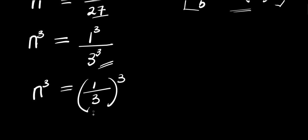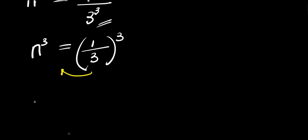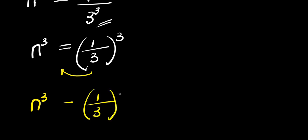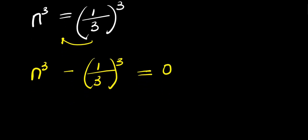So from here, we are going to move this over here — it becomes negative. So we are going to have n cubed minus (1 divided by 3) all to the power of 3, and this equals 0. As you can see, I have power 3 here and power 3 here, and there is a minus sign between them.